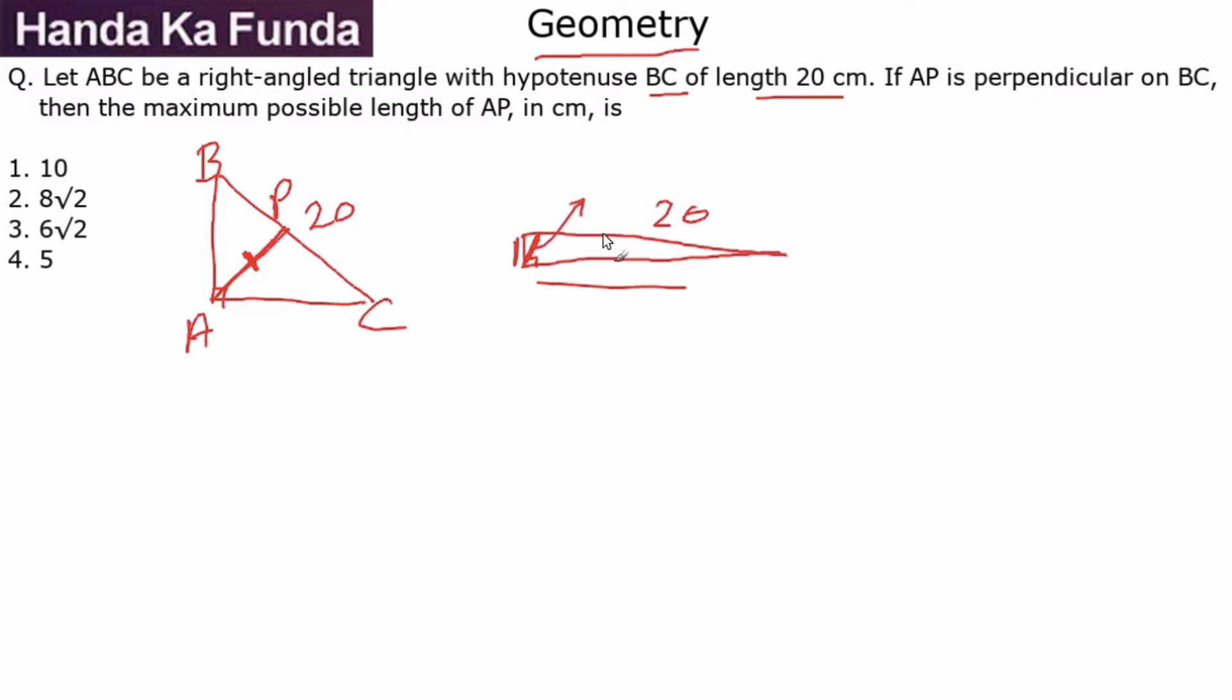On the other hand, this would be close to maximum in a diagram which is something like this where AB is actually equal to AC. When that happens, AP would be the biggest value.